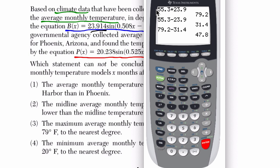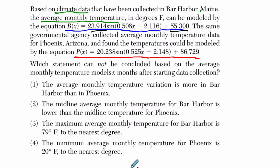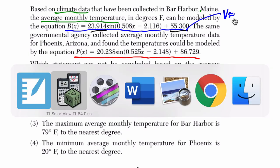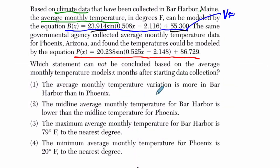So for Bar Harbor, I'm going to write this over here, the variation is about 47.8.